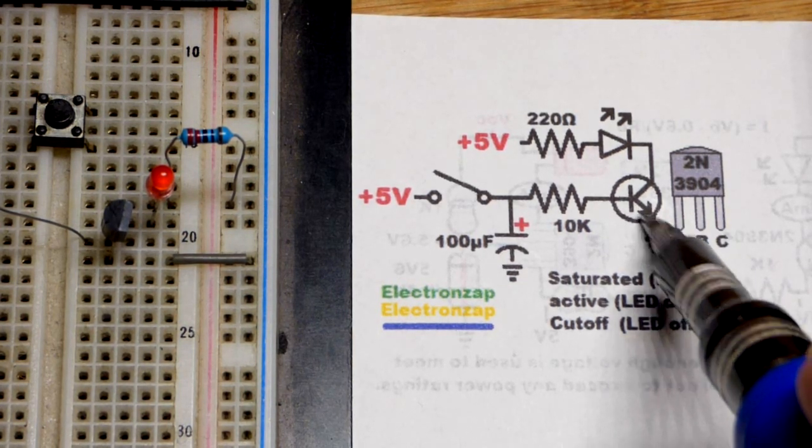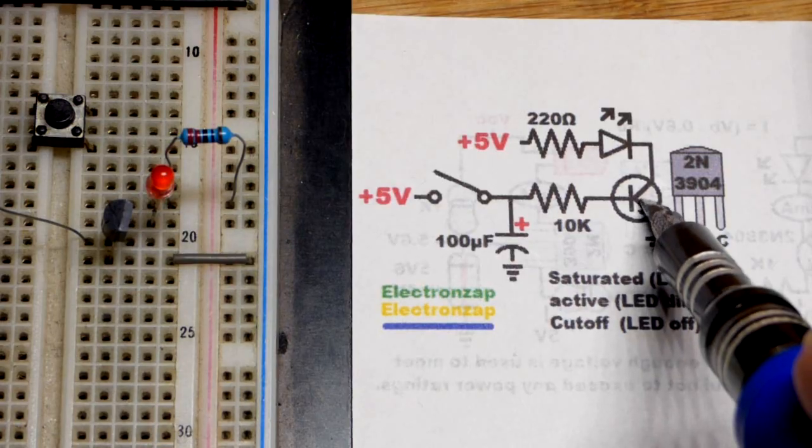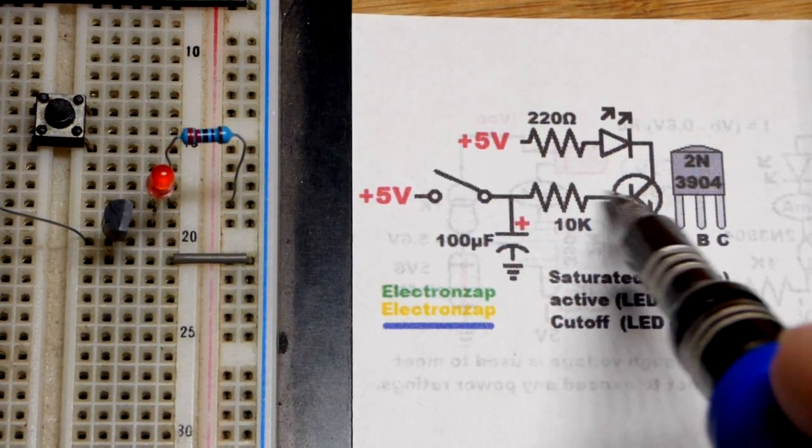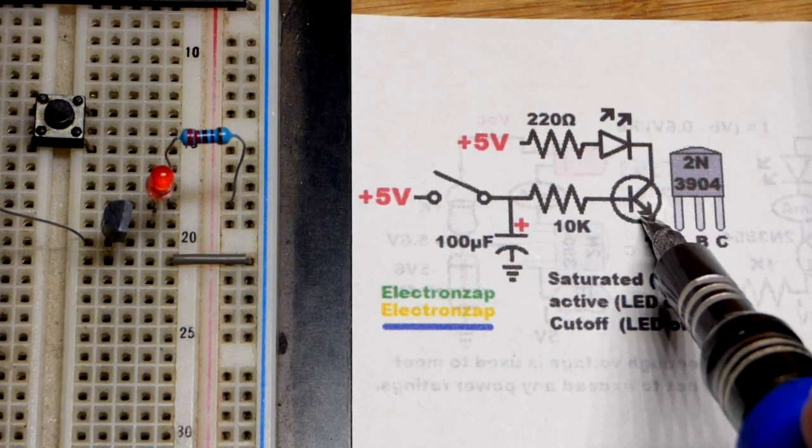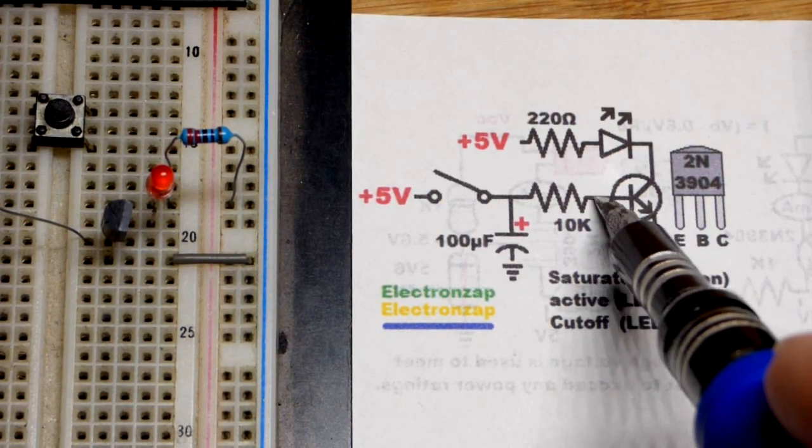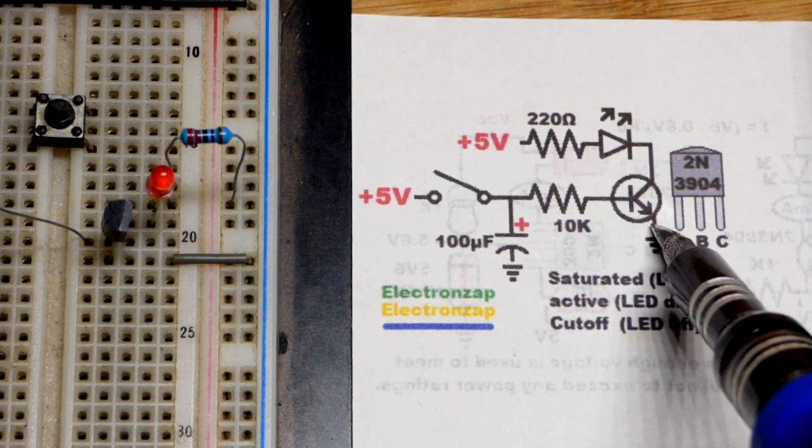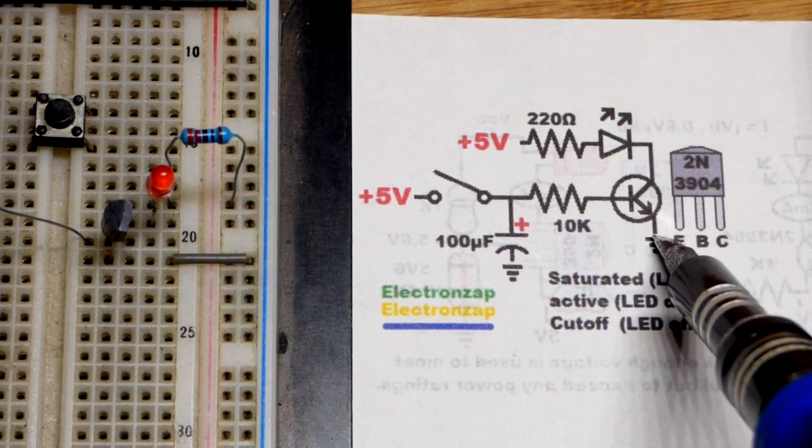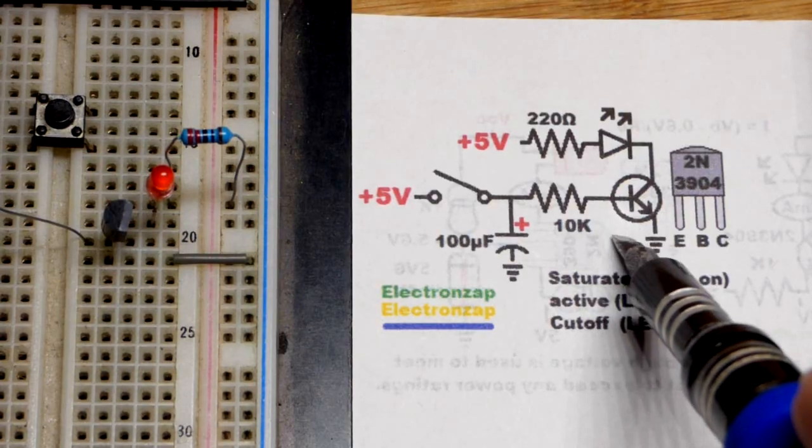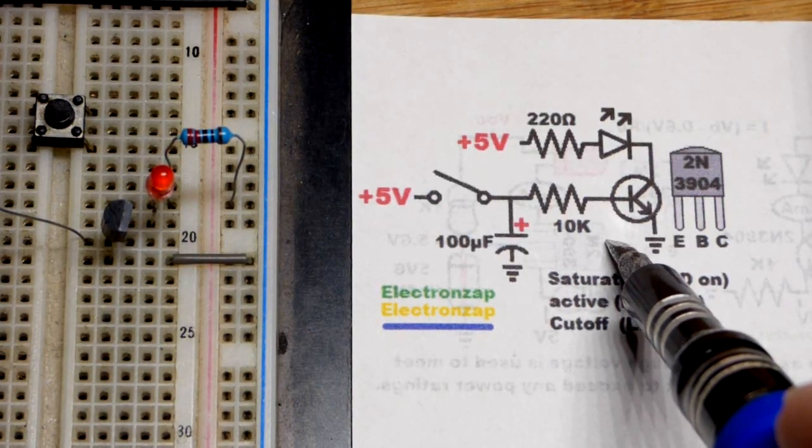When the current started going down, that is when the transistor started limiting current because it had less and less base to emitter current. If you have a gain of 100, then you need 1 milliamp of current base to emitter to allow 100 milliamps of current to flow through. So, just kind of a quick review. Hopefully, you already know that.